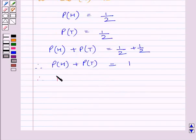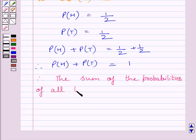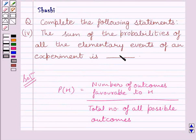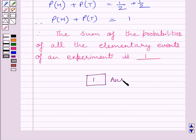So we get the sum of the probabilities of all the elementary events of an experiment is 1. So we can fill in this blank. So this is our required answer. This completes the session. Hope you understood the solution. Take care and have a nice day.